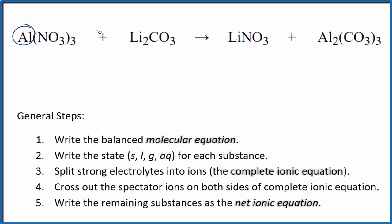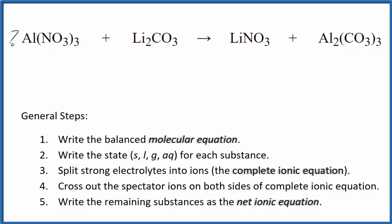So I can see that I have an aluminum here, but I have two here in the product. So I'm going to put a two in front of the aluminum nitrate. Balances the aluminums, but now I have three nitrate ions times two. I have six, so I'm going to have to put a six in front of the lithium carbonate.